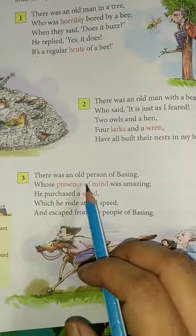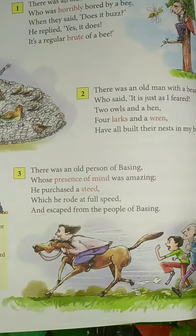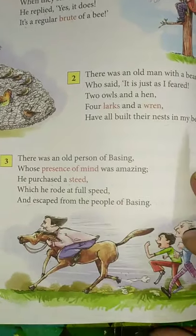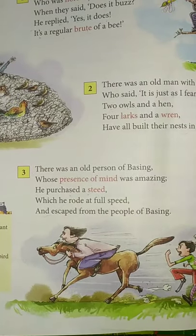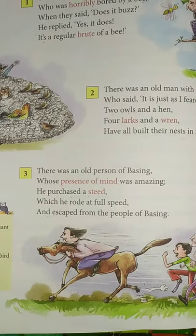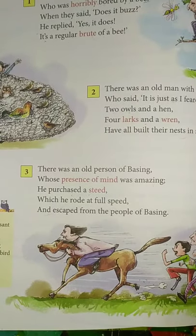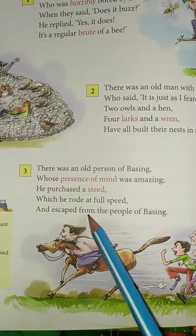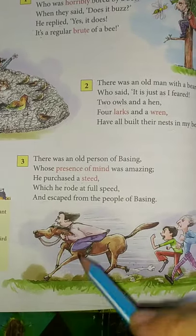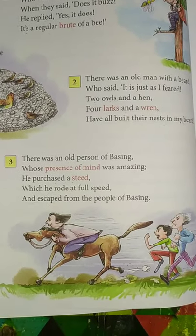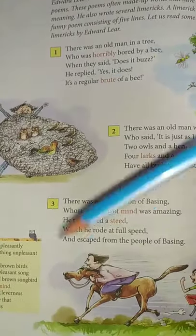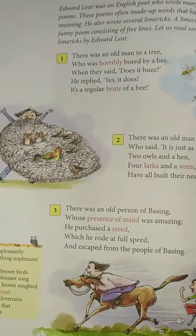Next hamaari third Limerick: 'There was an old person of Basing.' Ek puraana aadmi tha, Basing mein rehta tha. 'Whose presence of mind was amazing.' Presence of mind ka meaning hota hai — hamaara intelligence. Uska dimaag bahut achhe se tezi se chalta tha. 'He purchased a steed, which he rode at full speed' — usne ek ghoda kharida tha, jis par vo bahut tezi se sawaari karta tha. 'And escaped from the people of Basing' — aur vo chahta tha ki daudke Basing ke logon se bahut door chala jaaye.